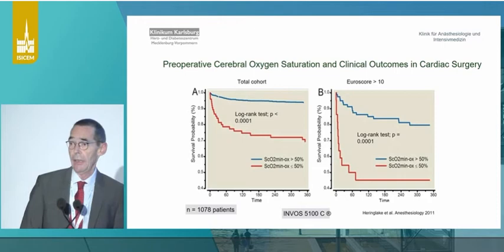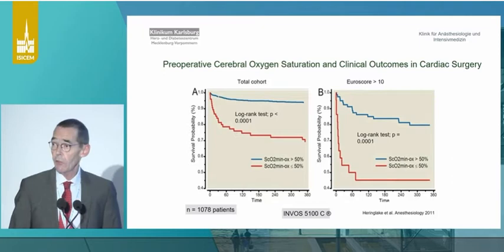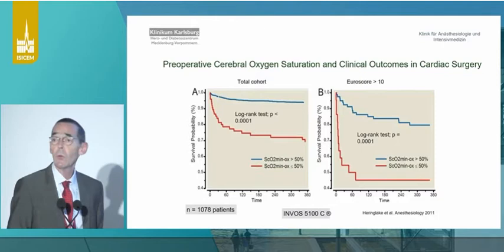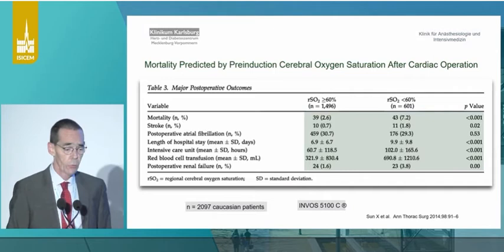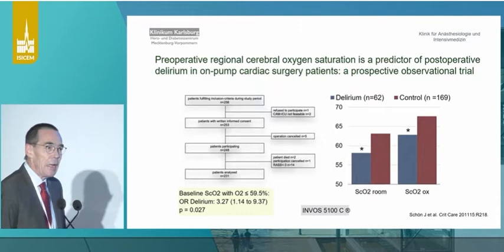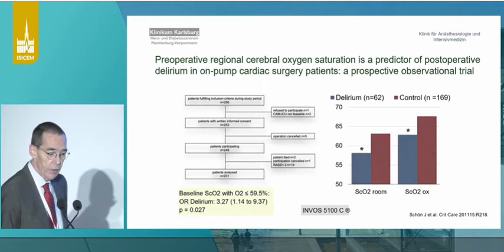What can we do with this technology? We can use it, at least with one specific device, for risk stratification. In a series of cardiac surgical patients, the lower the preoperative saturation, the poorer was the outcome. This has been repeated by some colleagues in New York — slightly different numbers, but nonetheless those entering the cardiac OR with a low cerebral oxygen saturation reading are at risk for a poor outcome. Not only mortality, but also delirium.